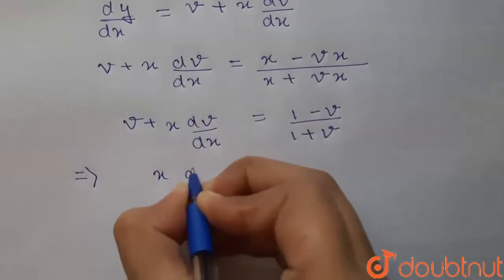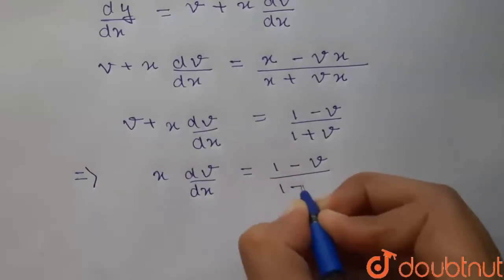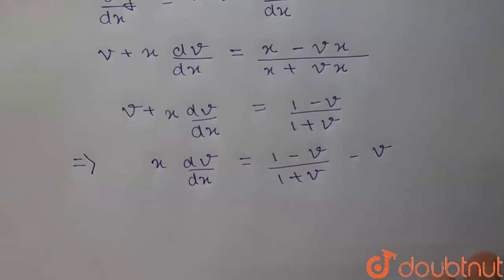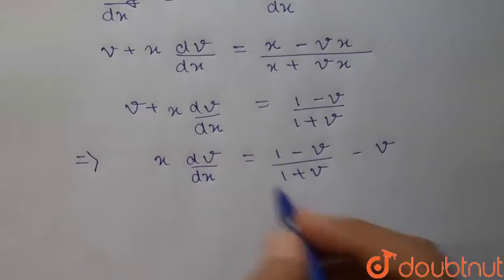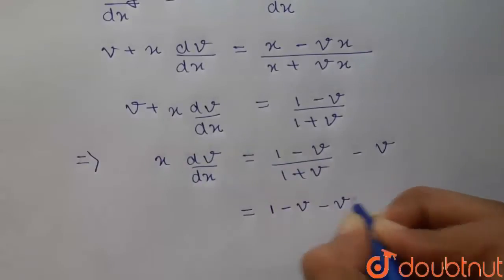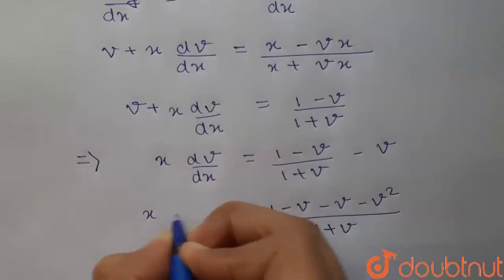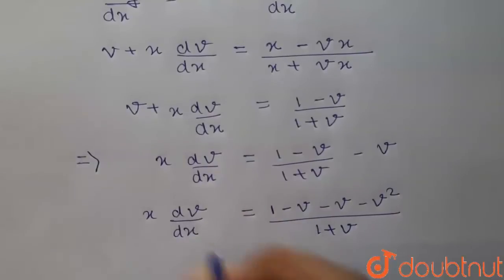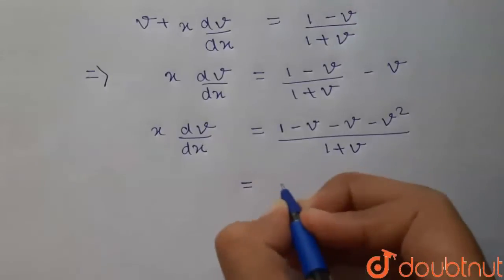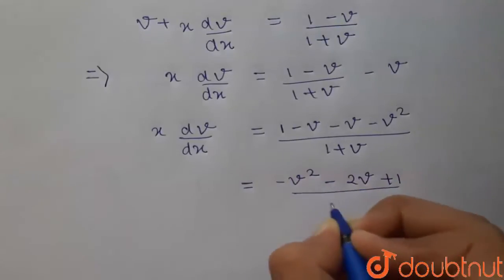So, x·(dv/dx) = (1 − v)/(1 + v) − v. We take v to one side so all terms with v are together. Taking LCM, this becomes (1 − v − v − v²)/(1 + v) = x·(dv/dx), which simplifies to (−v² − 2v + 1)/(1 + v) = x·(dv/dx).